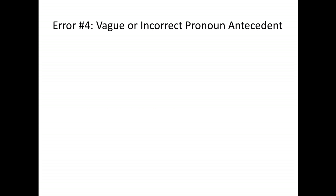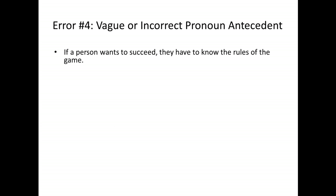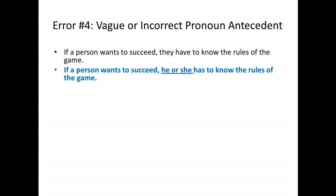Error number four: a vague or incorrect pronoun antecedent. Consider the sentence: 'If a person wants to succeed, they have to know the rules of the game.' This is commonly spoken today and is starting to sound familiar, but it is incorrect, because 'they' is a plural pronoun referring to the singular subject 'a person.' It should be: 'If a person wants to succeed, he or she has to know the rules of the game.'